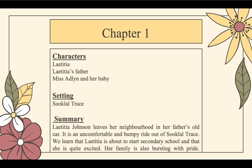Let's get started. Chapter 1. The characters in this chapter are Letitia, Letitia's father, Miss Adeline and her baby — those are minor characters that appear. The setting is Suklal Trace. Summary: Letitia Johnson leaves her neighborhood in her father's old car. It is an uncomfortable and bumpy ride out of Suklal Trace. We learn that Letitia is about to start secondary school and that she is quite excited, and her family is also bursting with pride.